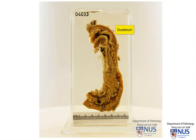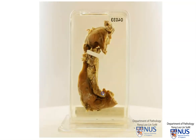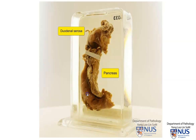We're looking here at the duodenum which has been cut open, and this little bit is just where the head of the pancreas and the ampullary region is. Turning this around, we can see the serosa of the duodenum, and this is part of the pancreas, and this is the cut margin of the pancreas.